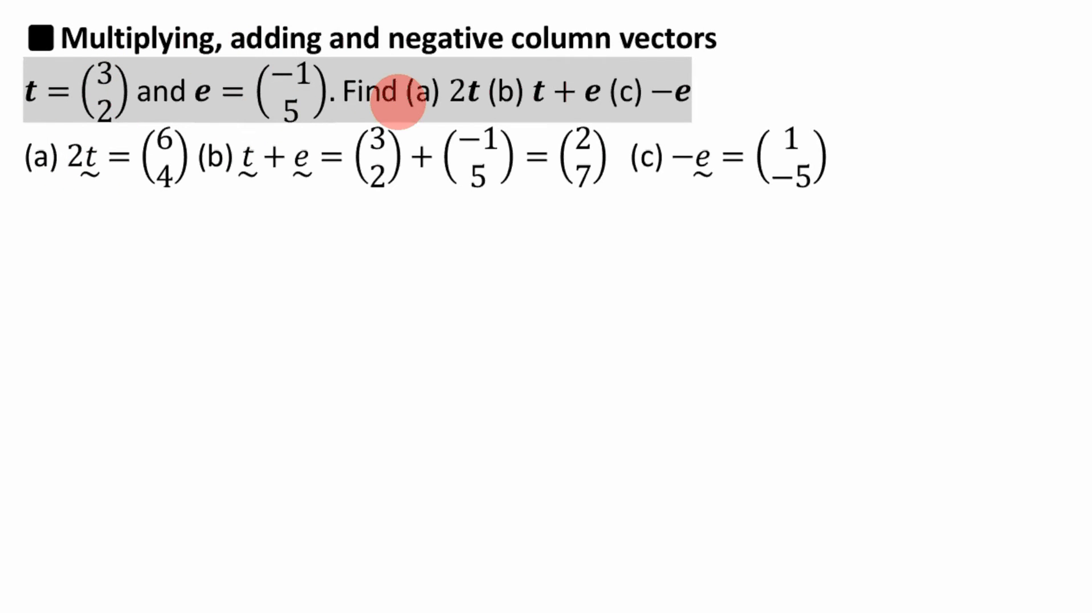So I'm just going to talk about how you multiply them, add them, or have negative vectors. Let's quickly do that. If I have 2 times my vector t, so this is vector t, this is vector e. If I have 2 times it, you just double it. So double that and double that, gives you 6, 4 instead, which should make sense.